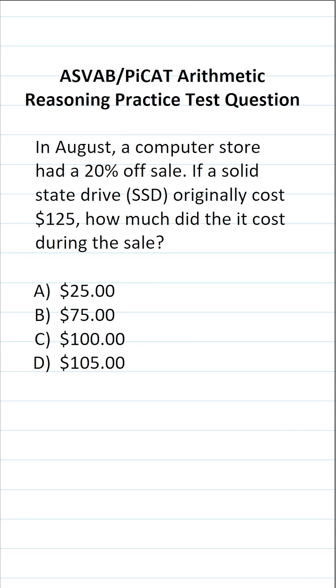So in this case, we're simply being asked to calculate the sales price. Sales price is always going to be your original price minus the original price times your discount amount.